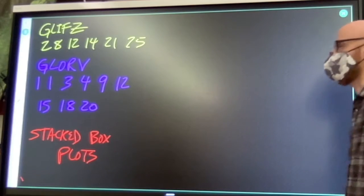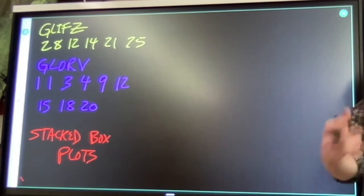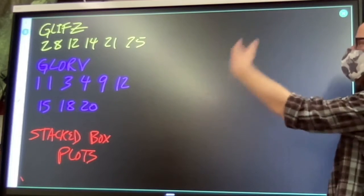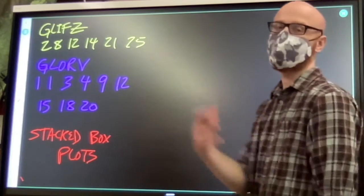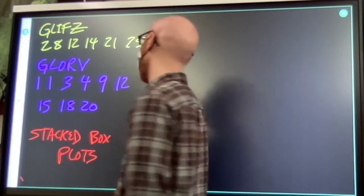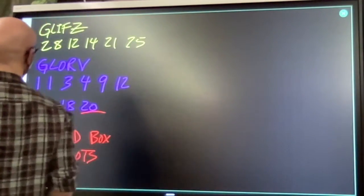Stacked box plots, or double box plots, or multi-box plots, whatever you want to call it. You got multiple sets. You're going to make a box plot out of each. Put them above the same number line. You need to find your biggest number, smallest number.